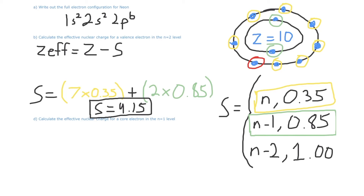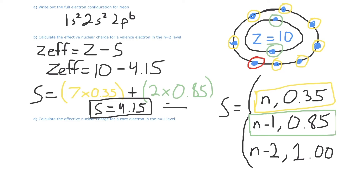This means the effective nuclear charge Z_effective is equal to the nuclear charge Z, which is 10, minus S, which is 4.15. So 10 minus 4.15 is equal to 5.85, which is our final effective nuclear charge for a valence electron in the n equals 2 level of our neon atom.